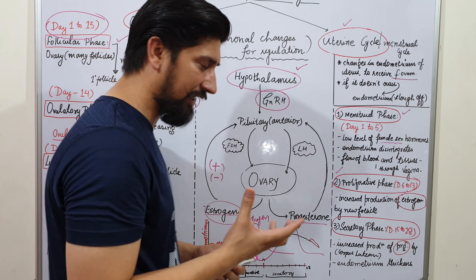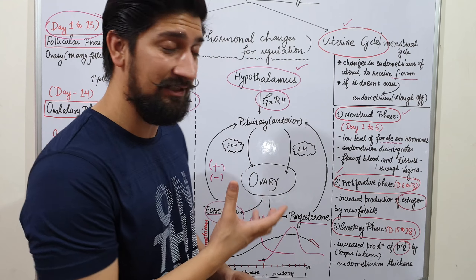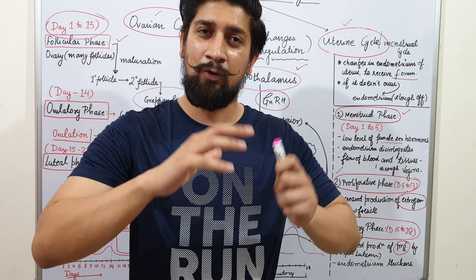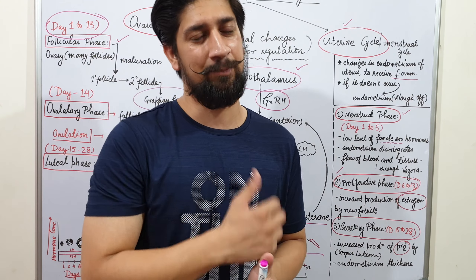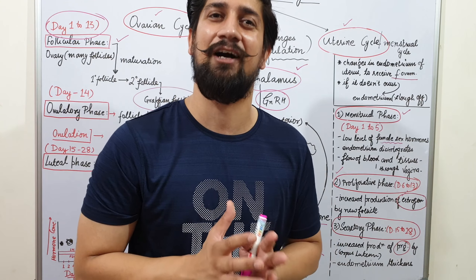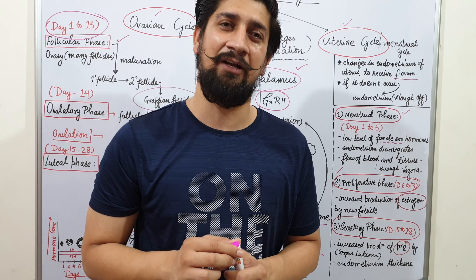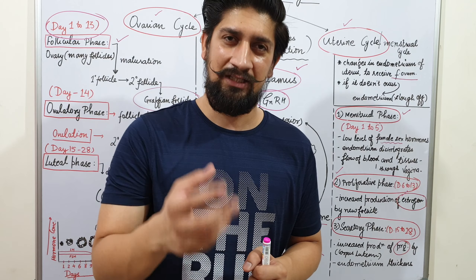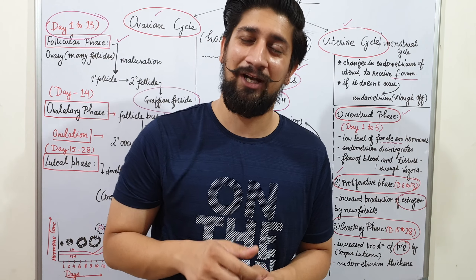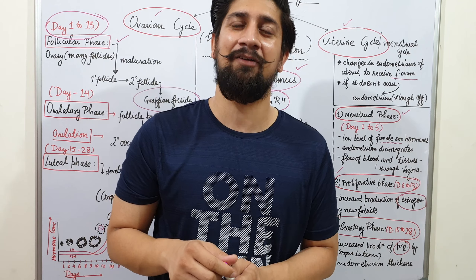The pituitary secretion — LH and FSH — is controlled by sex hormones. This is called the feedback mechanism. When a hormone is reduced or in excess, positive and negative feedback take care of regulation. Let's start with the first cycle, the ovarian cycle.